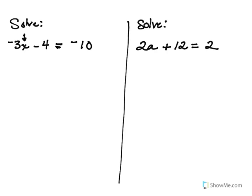So in order for me to move the 4, since it's currently subtracting from the x, I'm going to add 4 to itself and cross the equal sign to add it to the negative 10. So you go from left to right and bring down, keep everything in order: negative 3x minus 4 plus 4 simply cancels, equals a negative 10 plus a 4.